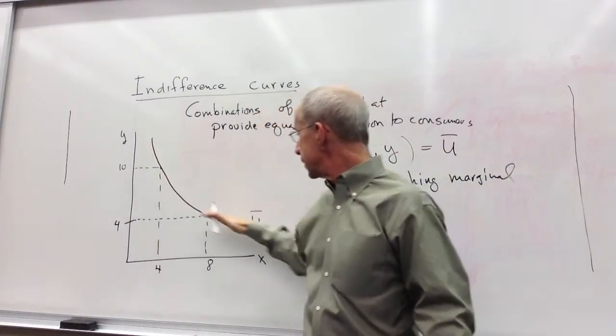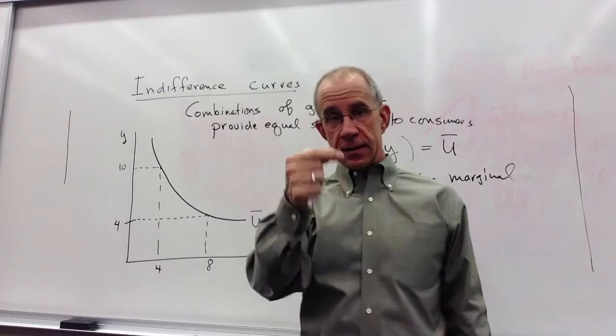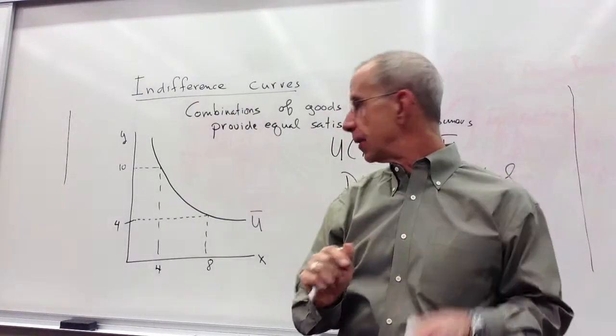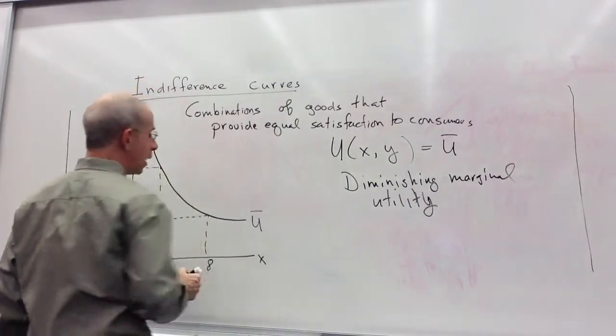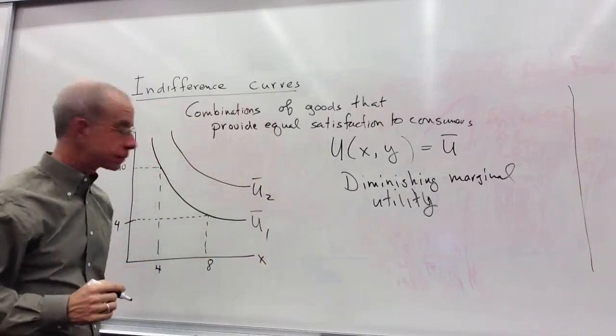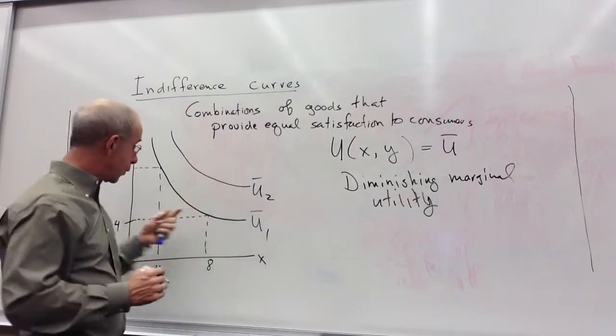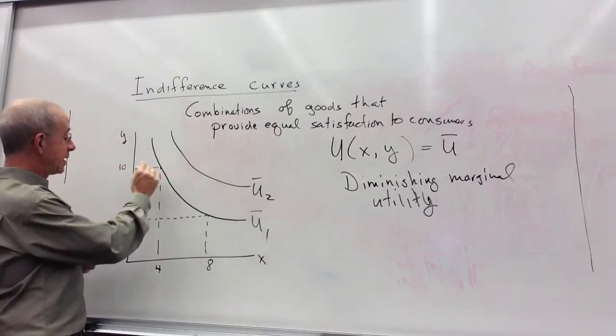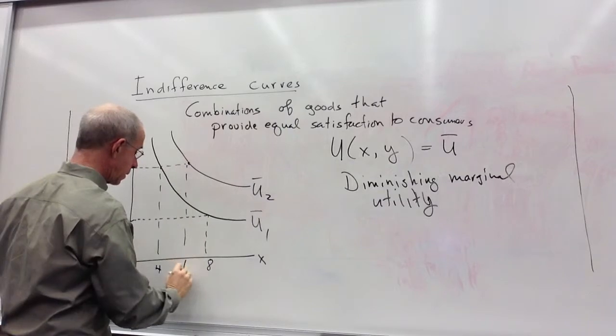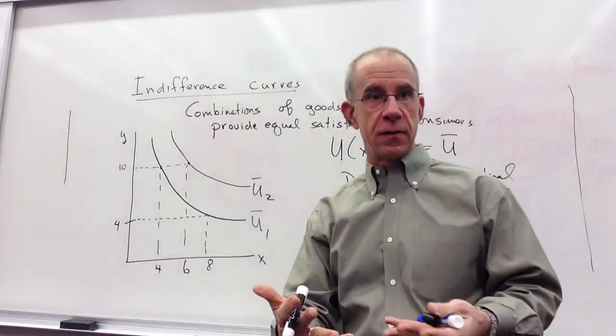One thing you'll notice is that this slope is negative. That's another way of saying if I decrease the consumption of one thing, I've got to add something else. If I want to get a higher level of utility, I can do so by increasing the consumption of both goods. Maybe if I consumed 10 units of y and 6 units of x instead of 10 units of y and 4 units of x, that would be a higher level of satisfaction.